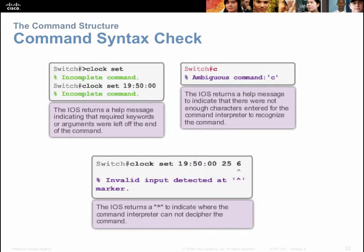If you have an ambiguous command — as shown in the example — that message means you haven't provided enough information and the device doesn't know what command you mean. For example, typing just 'c' and hitting enter returns 'ambiguous command', meaning unknown. In the bottom example, the router doesn't know what the '6' means, so it says 'invalid input detected' and shows a caret pointing at the problem spot — indicating it understood everything up to that point but not the '6'. This feedback helps you as an admin know what went wrong and how to fix it.